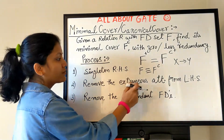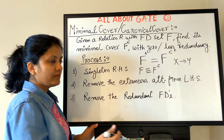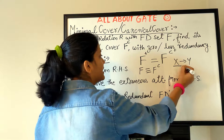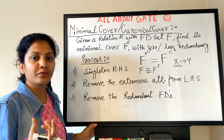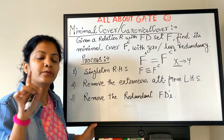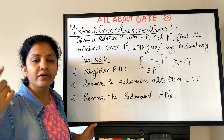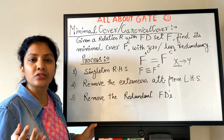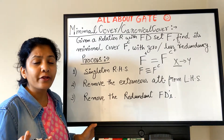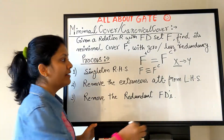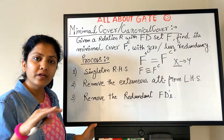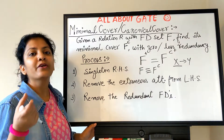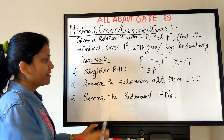The second step is to remove extraneous attributes from the LHS. If your LHS has multiple attributes — if X is a combination of multiple attributes — you have to find out whether all the attributes are needed to determine the value of Y. Extraneous means additional, extra, redundant, or not-needed attributes present in your X. If yes, you have to remove them. The idea is to simplify your functional dependencies.